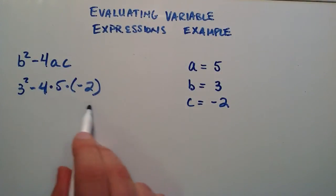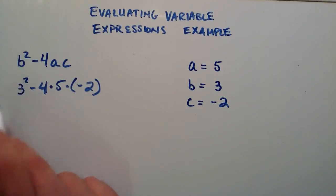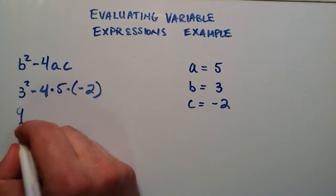So now we're looking at this as order of operations. We have an exponent, we have subtraction, and we have two multiplications. Out of those the exponent goes first. So we evaluate this, this is 3 multiplied by itself 2 times. So 3 times 3 which gives us 9.